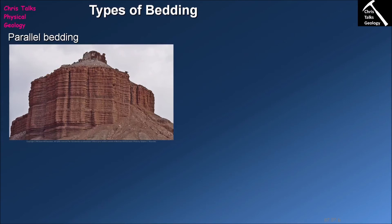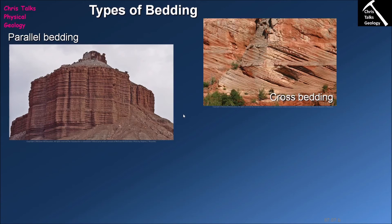The vast majority of sedimentary bedding is parallel bedding, where numerous beds run parallel to each other. However, there are distinct types. The first is cross bedding, seen within a defined layer of rock that contains diagonal beds cutting across it. Cross beds are formed by dunes and are typical of environments such as deserts or dune sands behind a beach.